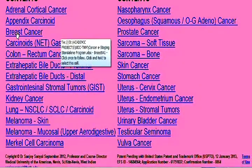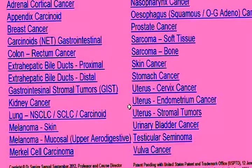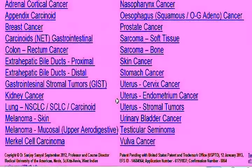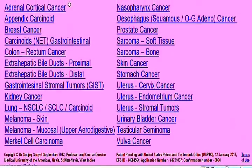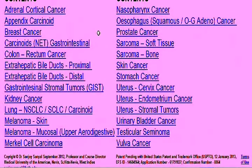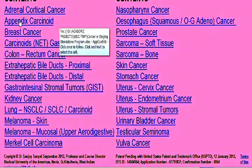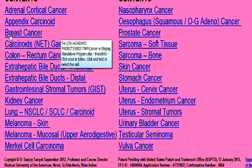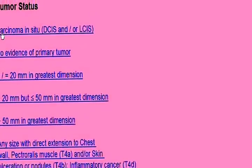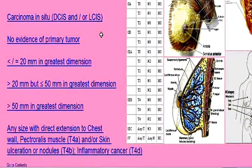Let's say you want to stage a patient with breast cancer. You click on the breast cancer option. This will bring you to the tumor status page of the patient. Let's say the patient has a tumor between two to five centimeters, in which case you click on option T2.